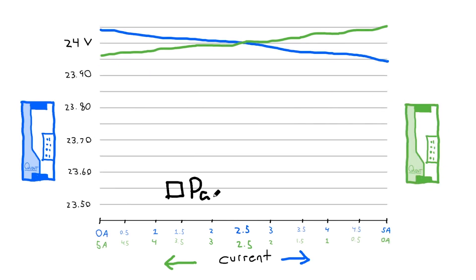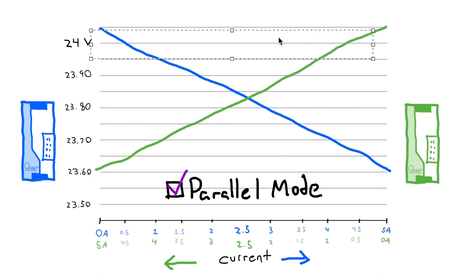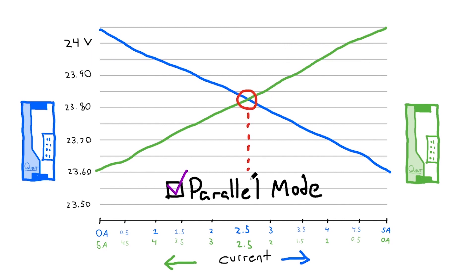When the QUINT power supplies are configured in parallel mode, their slopes are steepened a bit. This means that the same change in voltage will result in the intersection point changing much less.